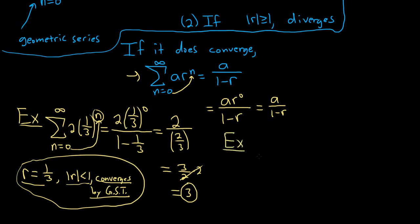Say we had n equals 2 to infinity, 3 times 1 half to the n. Same thing here. If you were doing this problem, you would say r is 1 half, it's less than 1, it converges by the geometric series test. You just write down r, mention that it's less than 1 in absolute value, then say it converges by the GST.